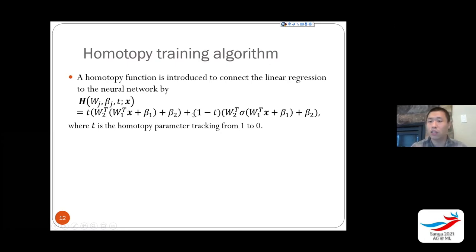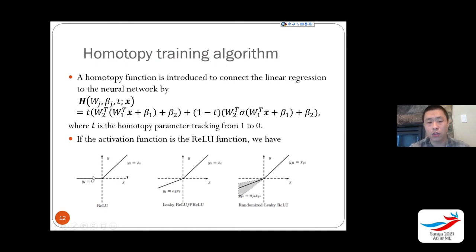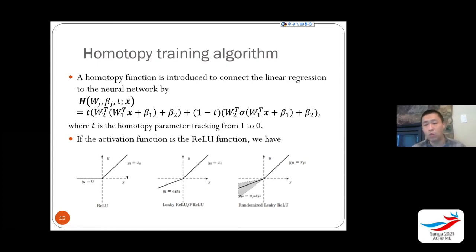The homotopy function has T=1 as linear regression and T=0 as a neural network with one hidden layer — a linear combination. For a ReLU network this makes sense: at T=1 the activation is identity (linear), at T=0 it's ReLU. What the homotopy does is apply a homotopy to the slope of the upper part of ReLU — T=1 becomes leaky ReLU, and eventually you become ReLU at T=0. Tracking T solves the ReLU network.